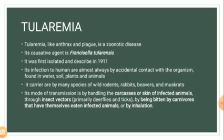Human infections are almost always by accidental contact with the organism found in water, soil, plants, and animals, since tularemia is a zoonotic disease. Reservoir hosts include many species of wild rodents, rabbits, beavers, and muskrats, as well as insects such as fleas. The mode of transmission includes handling carcasses or skin of infected animals, through insect vectors — primarily deer flies — being bitten by carnivores that have eaten infected animals, or by inhalation.